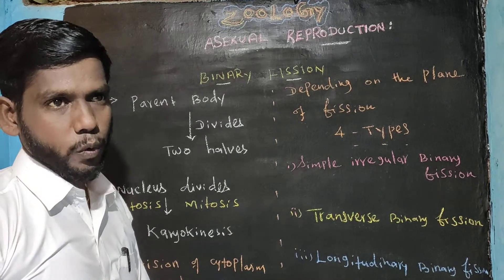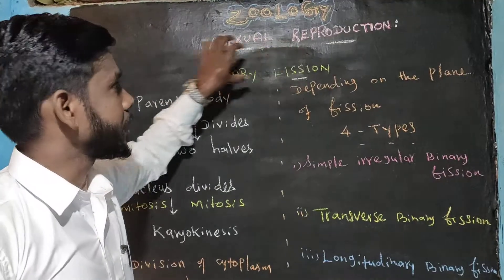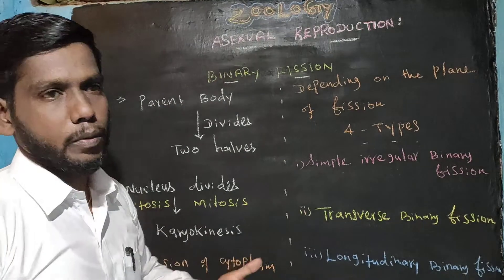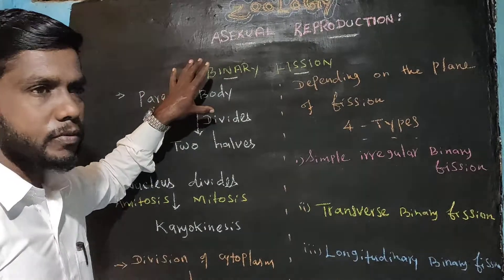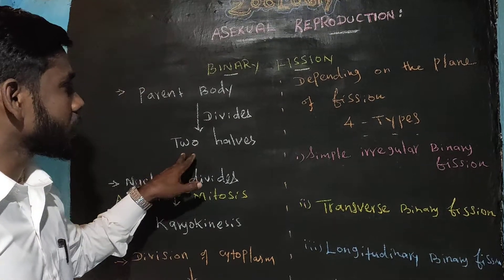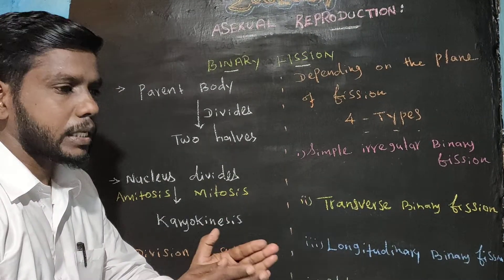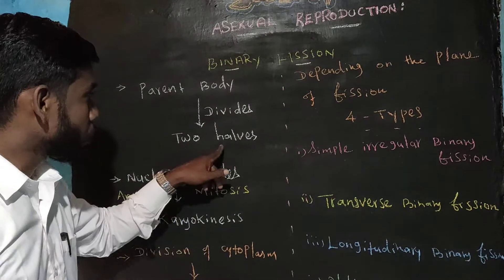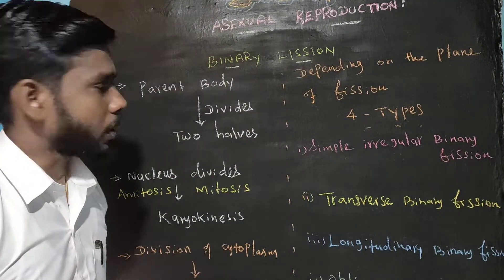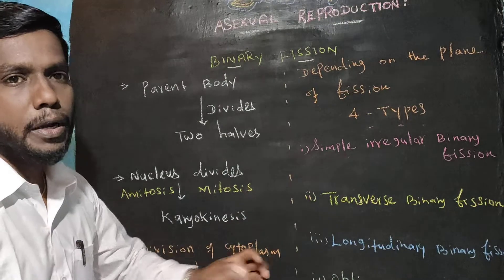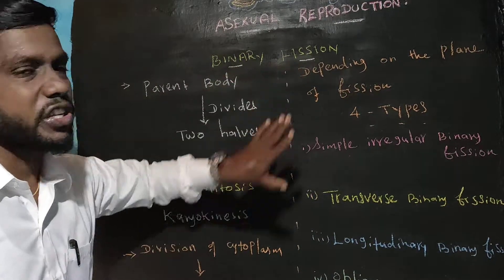Now we are going to discuss binary fission. In binary fission, the parent organism first divides into two halves, and those two halves produce the daughter organisms. This is binary fission.